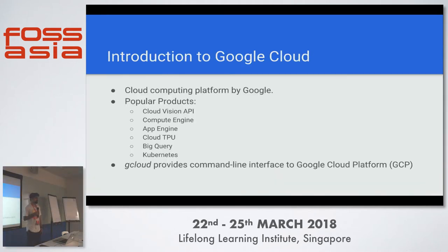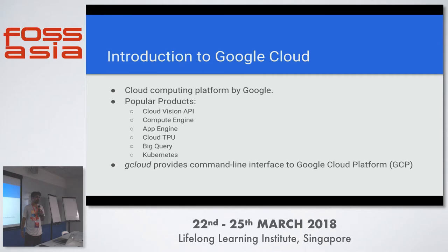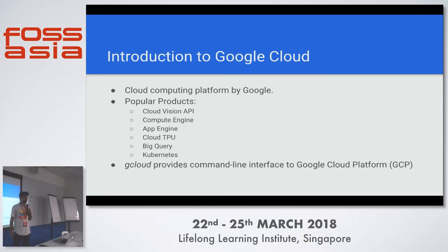So what is Google Cloud? It is a cloud computing platform provided by Google. There are more platforms like this, like AWS and Azure. Google has also come up with their own services in this field. Some of the popular products are Cloud Vision API, which we are going to talk about today. There is Compute Engine where you can launch your own virtual machines and do some processing — you can have Linux machines on that. And then there is App Engine, which lets you launch web apps or mobile apps.